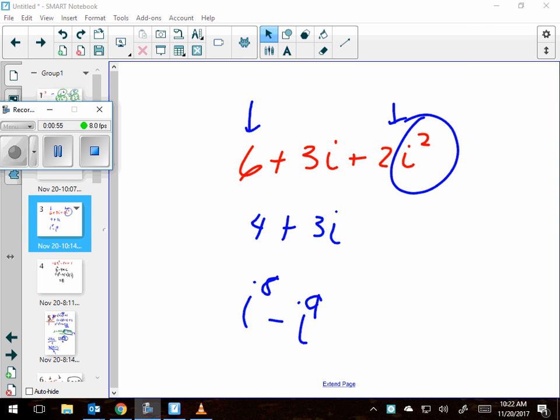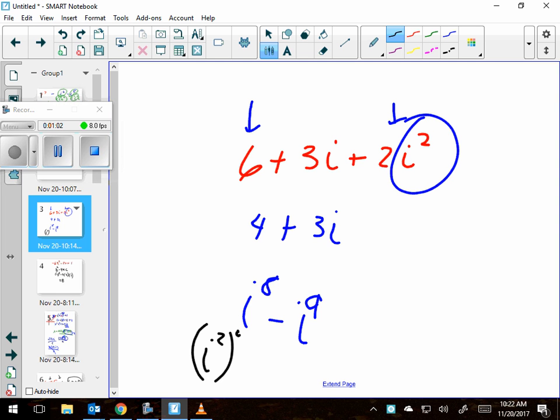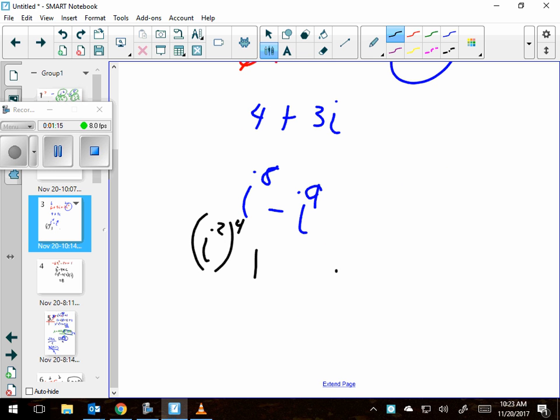So, did you say i to the eighth was a whole bunch of i squareds? In fact, four of them. I could even say it this way. i squared times i squared times i squared times i squared. And that's negative one to the fourth, which is a positive one. And then this i to the ninth, that's easy to figure out because it's just one more i than this one. So then that's an i. And then there's a minus in between them. And all it would take is to mess up that one sign and you'd get it wrong. But one minus i.